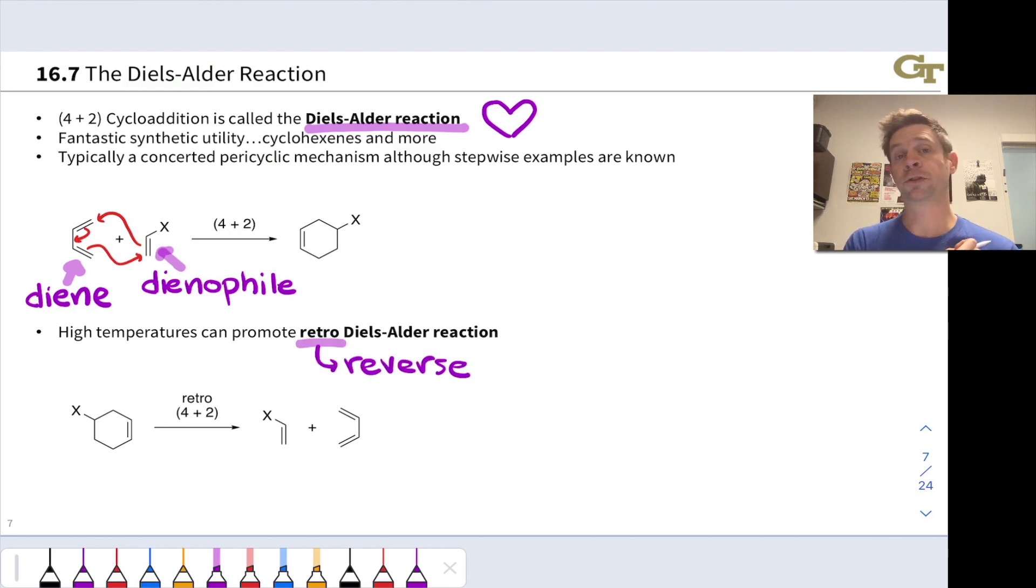Now, high temperatures can promote what's called the retro Diels-Alder reaction. Retro here is a term we use to refer to the reverse process, which is going to correspond to the cyclo elimination, we might say.